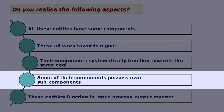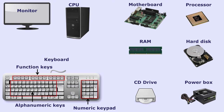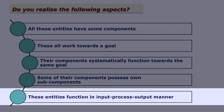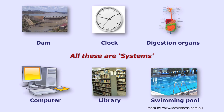Some of their components possess their own subcomponents. For example, a computer may have a monitor and a keyboard. The keyboard again has function keys, numerical keys, and alphabetical keys. The CPU has many components: motherboard, processor, power box, RAM chips, hard disk, and CD drive. These entities function in an input-processing-output manner. For the computer and for the digestion system, you provide some input, then there is processing, and then there is output. All these are examples of a system.